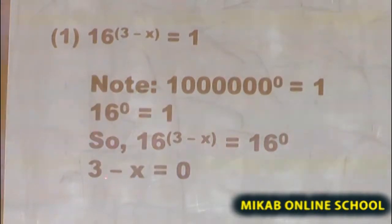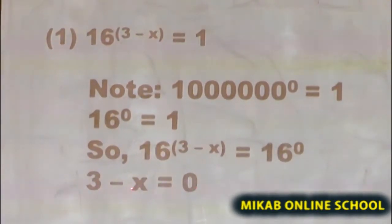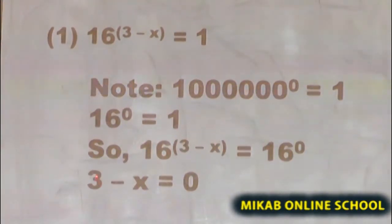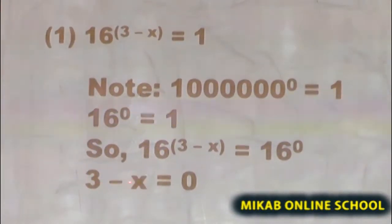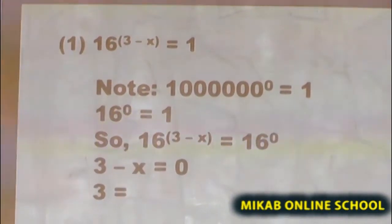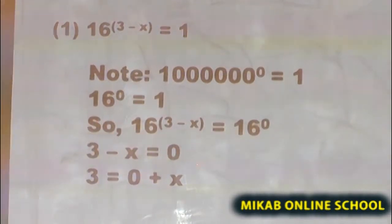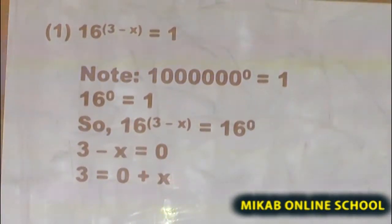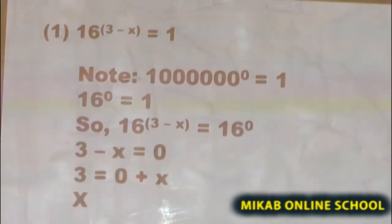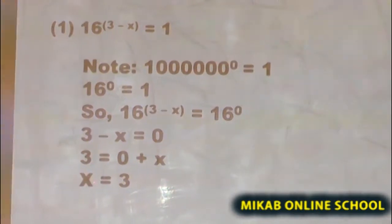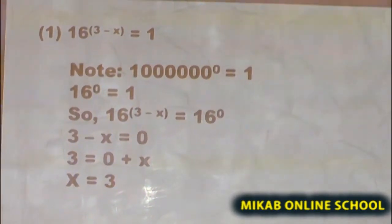We collect like terms from 3 minus x equals 0. The x is an unknown and 3 and 0 are numbers. Moving x across the equal sign, the negative changes to positive, giving us 0 plus x equals 3. Since adding 0 to any non-zero value leaves it unchanged, x equals 3. That is the solution of the first question.